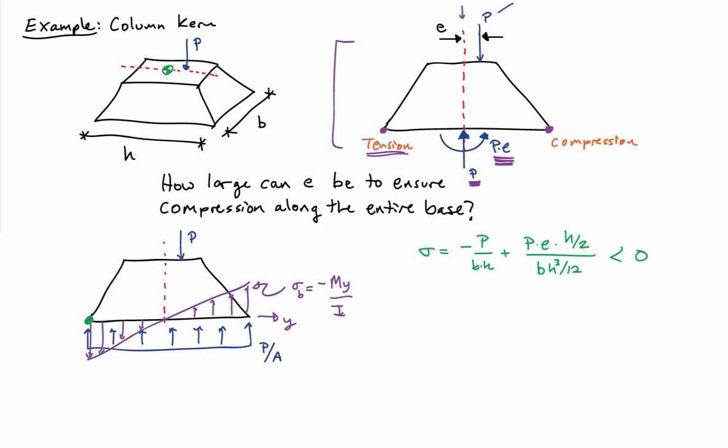The total stress by superposition at that corner, the left corner, is going to be minus P over BH plus PE H over 2 divided by BH cubed over 12. That gives me the stress at that point. If I'd like it to be compressive, it has to be less than or equal to 0.